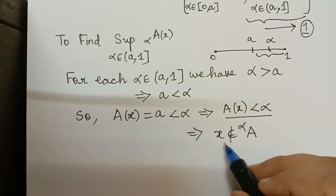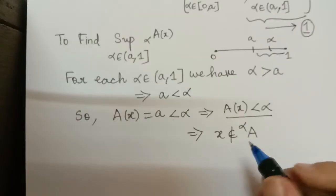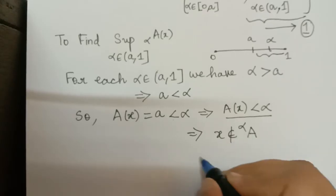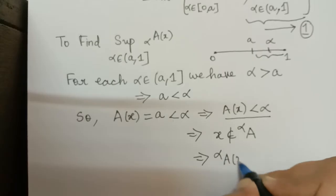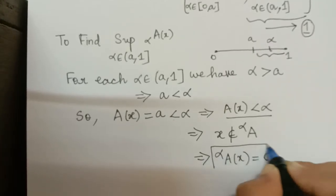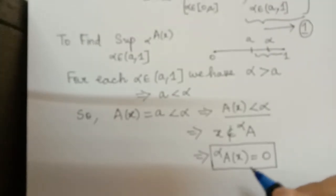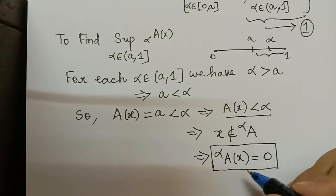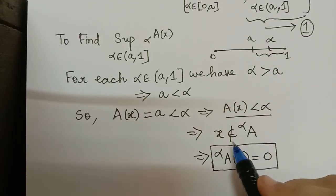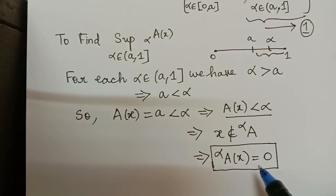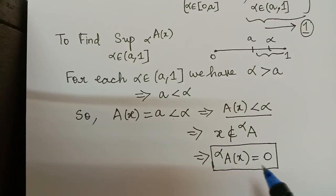By the definition of the special membership function, if x is an element then the membership value αA(x) equals 1. But here x is not an element, so αA(x) equals 0. The special membership function takes only two values, 0 and 1: if x is an element it equals 1; if not, it equals 0.